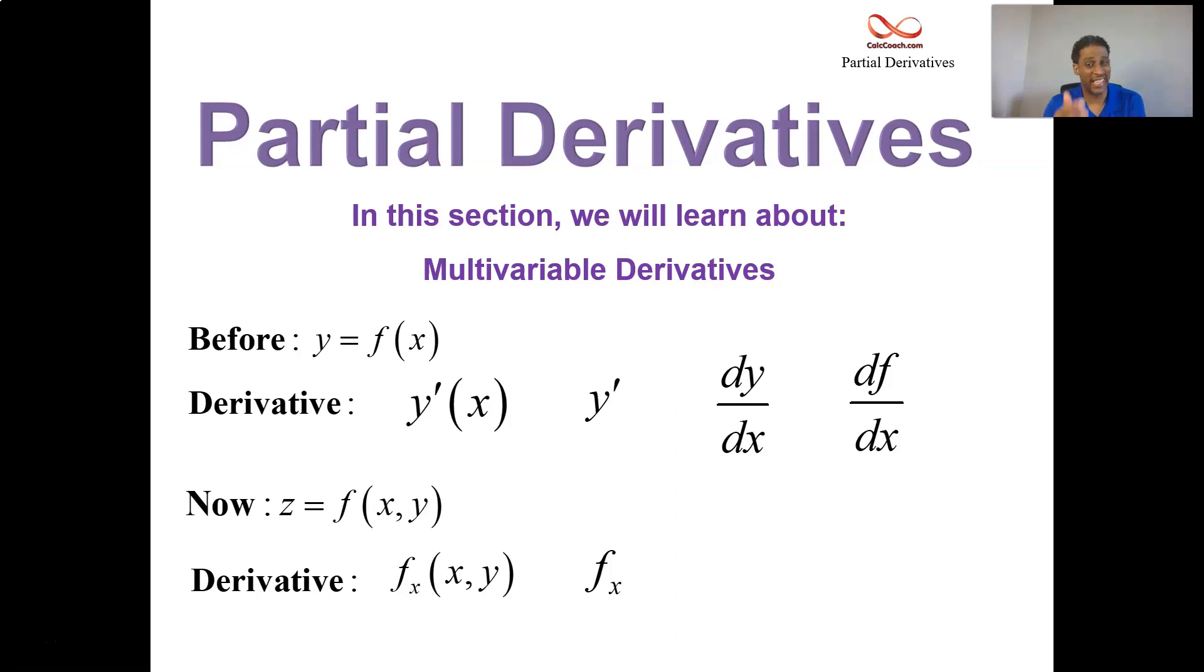There is a d notation, but it isn't an actual letter d from the English alphabet. We go to the Greek alphabet and use the lowercase delta. So ∂z/∂x—that's the derivative of z with respect to x, but partial derivative.